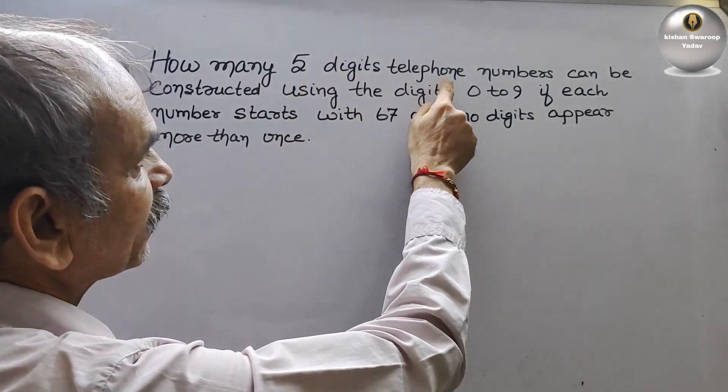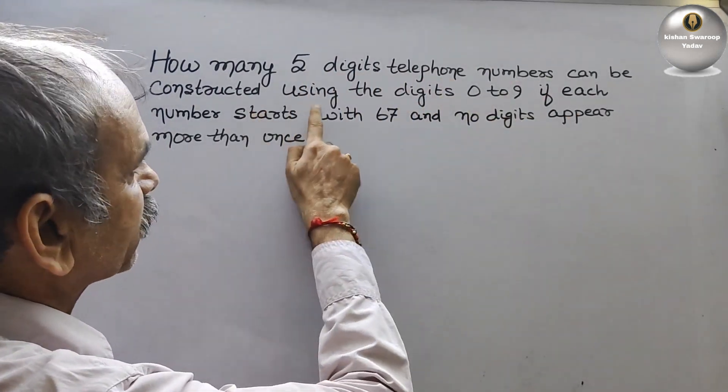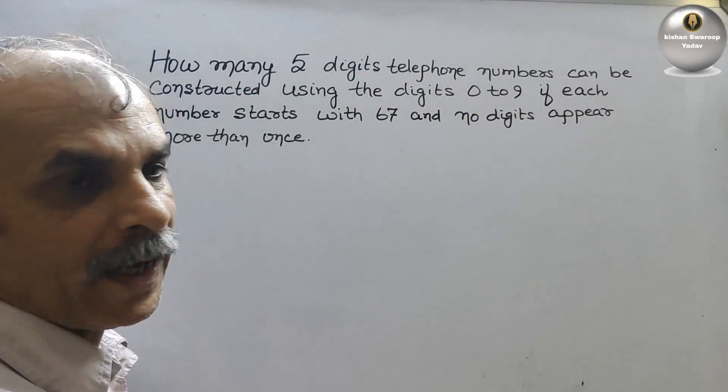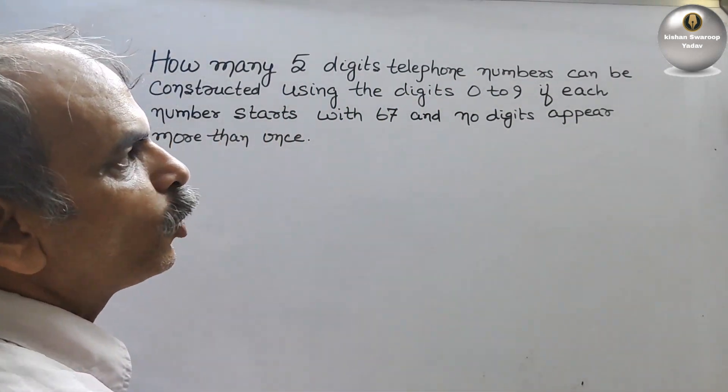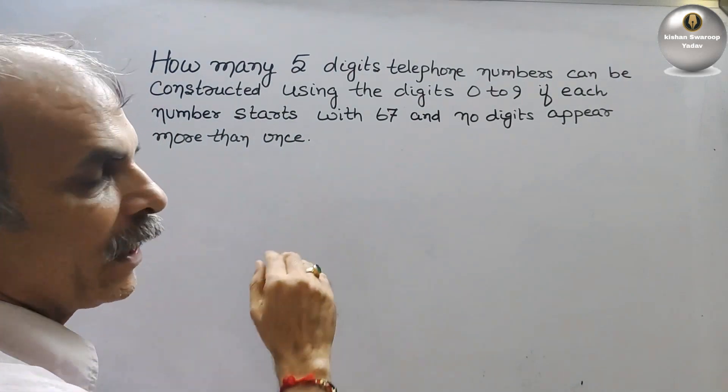How many 5-digit telephone numbers can be constructed using the digits 0 to 9 if each number starts with 67 and no digits appear more than once?